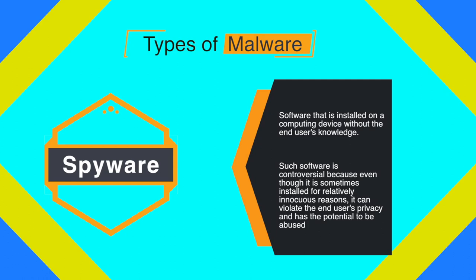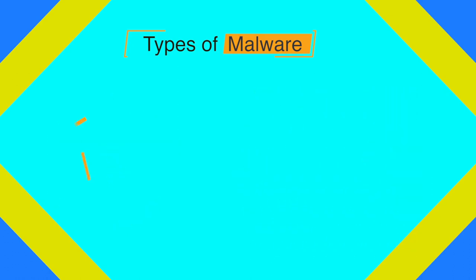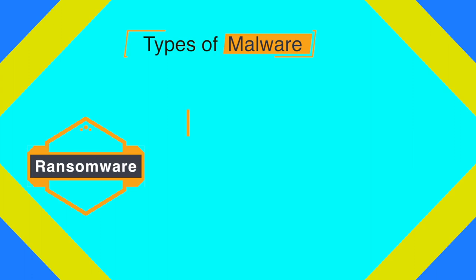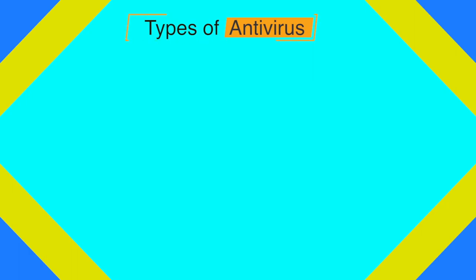Those were the five main types of malware. There are also other types such as ransomware and adware. Now let us discuss 11 different antiviruses which are free to obtain and install. They are listed in alphabetical order, not in order of preference. The first is Avast antivirus.